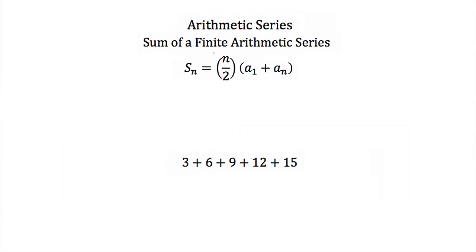Since finite arithmetic series have a final term, that means we can find the sum of a finite arithmetic series. Here we have an example series: 3 plus 6 plus 9 plus 12 plus 15. We can add all these numbers together: 3 plus 6 is 9, add 9 to get 18, add 12 to 18 to get 30, add 15 to 30 and this becomes 45. Now if we had many more terms in this series, this could get very difficult, so instead we can always use this formula.